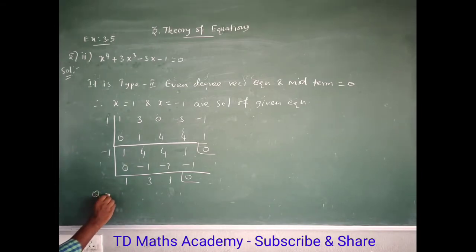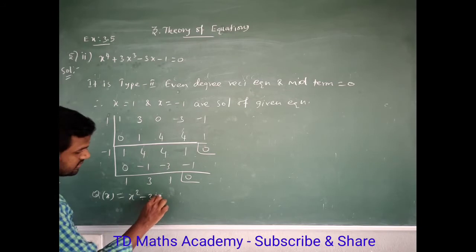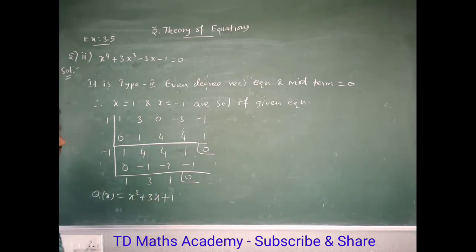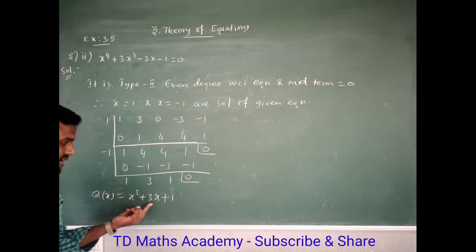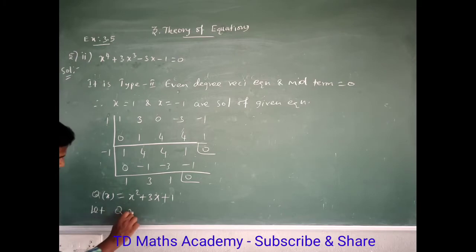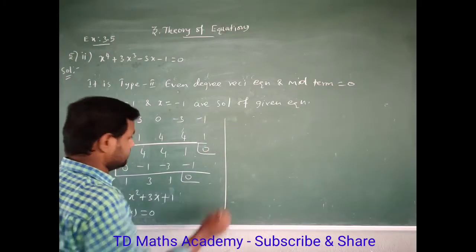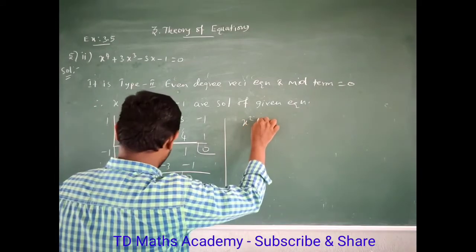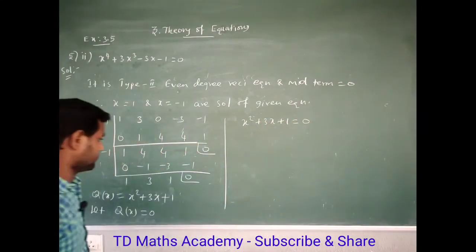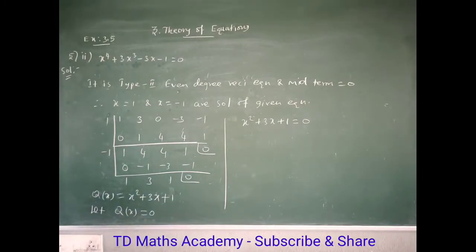After dividing out both factors, you get the quadratic factor q(x) = x² + 3x + 1. So the equation reduces to x² + 3x + 1 = 0.